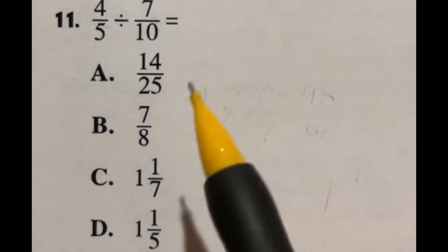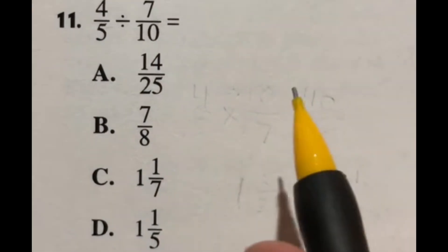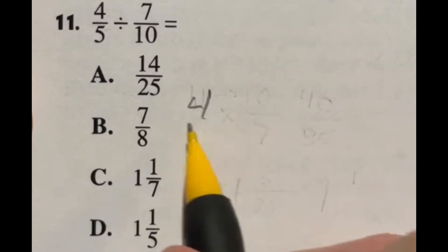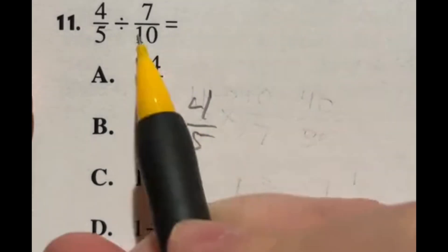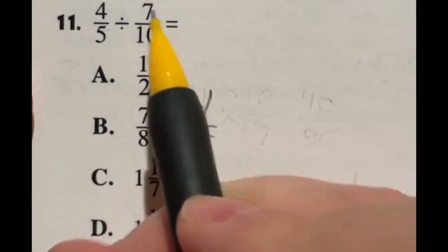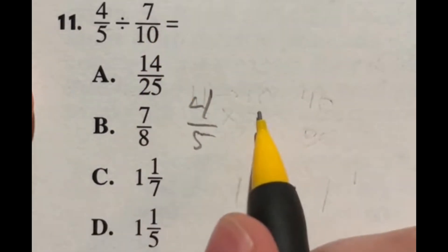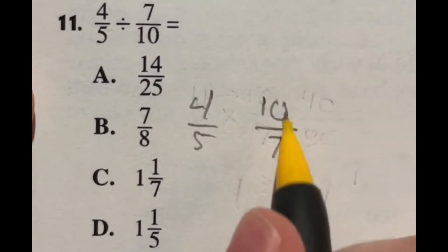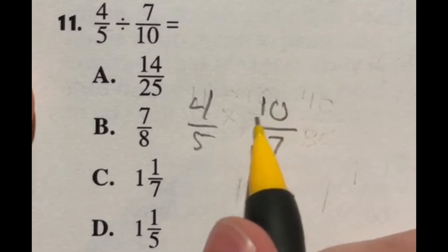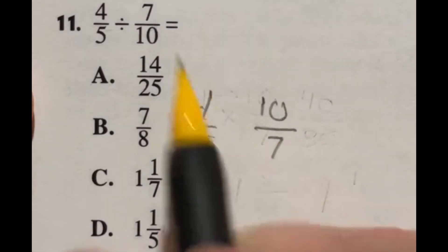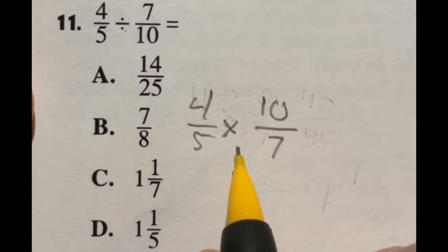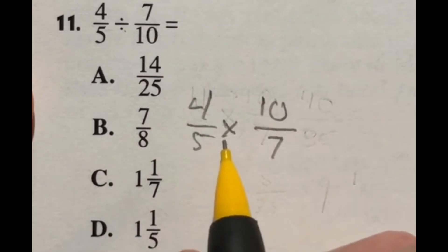Dividing fractions is actually a lot easier than multiplying mixed numbers like we had to do yesterday. If you're dividing a fraction, here's what you do: rewrite the first one, four over five, and then you can actually flip this second fraction upside down — so that would be 10 over seven. We call this a reciprocal. Now if you take the reciprocal, you can actually change this division to a multiplication, which is why this is much easier than all the work we were doing before.